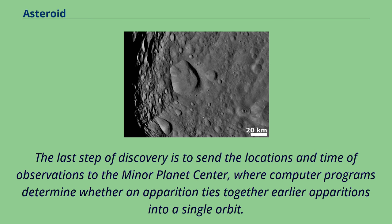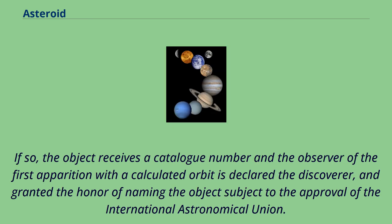The last step of discovery is to send the locations and times of observations to the Minor Planet Center, where computer programs determine whether an apparition ties together earlier apparitions into a single orbit. If so, the object receives a catalog number, and the observer of the first apparition with a calculated orbit is declared the discoverer and granted the honor of naming the object, subject to the approval of the International Astronomical Union.